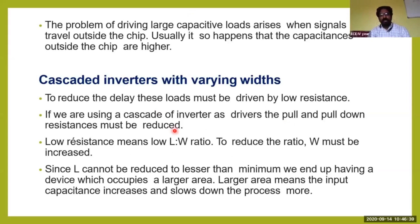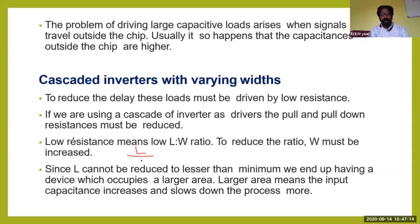If we use a cascade of inverters as drivers, the pull-up and pull-down resistances must be reduced — the resistance of the PMOS transistor and the NMOS transistor has to be reduced. To reduce the resistance, we increase the width of the transistor. The width of both PMOS and NMOS should be increased. Low resistance means a low L-by-W ratio; since W is in the denominator, increasing W gives lower resistance.